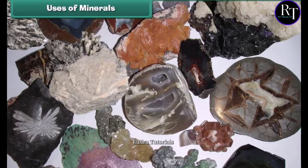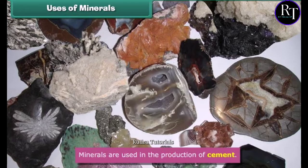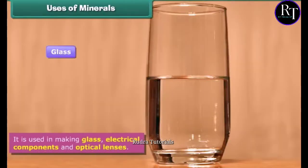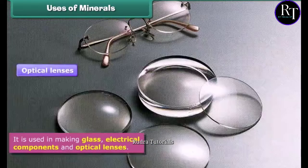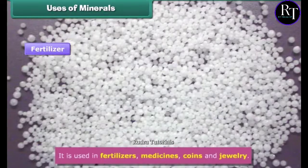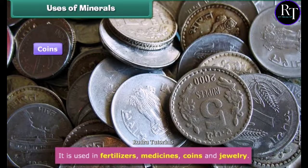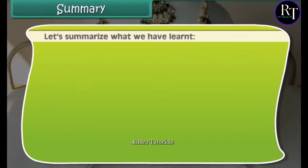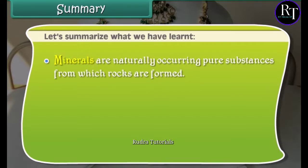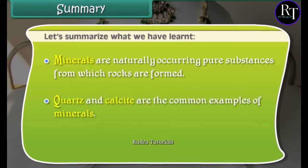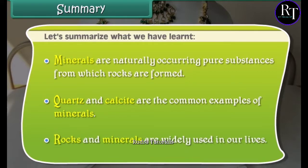Uses of minerals: Minerals play an important role in our lives. Minerals are used in the production of cement. They are used in making glass, electrical components, and optical lenses. These are also used in fertilizers, medicines, coins, and jewelry. Minerals are naturally occurring pure substances from which rocks are formed. Quartz and calcite are the common examples of minerals. Rocks and minerals are widely used in our lives.